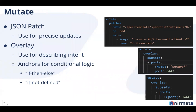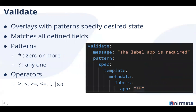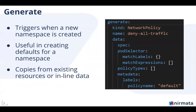Going into the first operation: mutate. There are two options. Either you can directly specify a JSON patch saying go ahead and do this particular mutation, or you could use an overlay. The idea behind overlay is it allows you to define anchors — so if a particular key is defined at a value or if it's not defined, then add a value. That's how we use the if-then or if-not-defined constructs. The validate operation is basically you defining an overlay saying that in this case I am supposed to have a particular label called 'app' out there, and then you can define patterns and use operators.